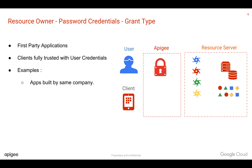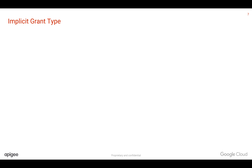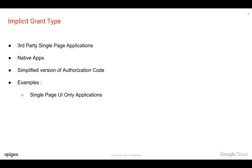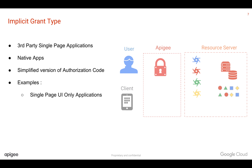The last one is the implicit grant type, which is generally used for single-page applications. Treat this grant type as a simplified version of authorization code where the authorization code is not sent back — the access token is sent back directly. It is generally used in single-page UI-only applications.